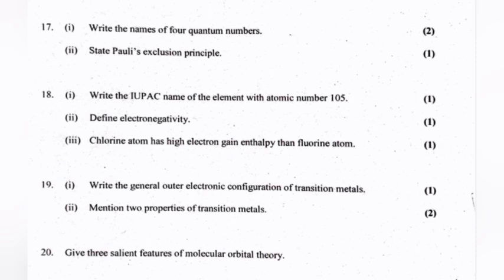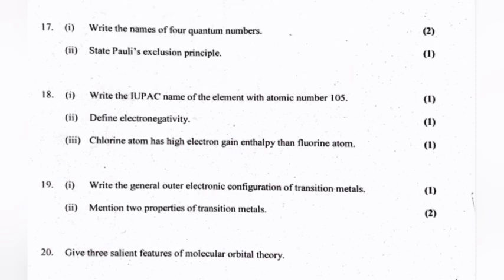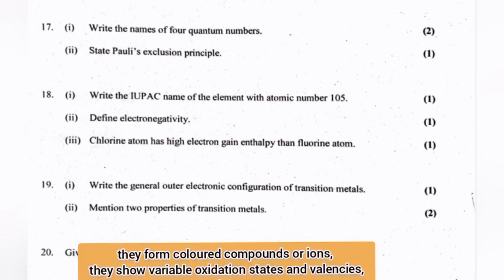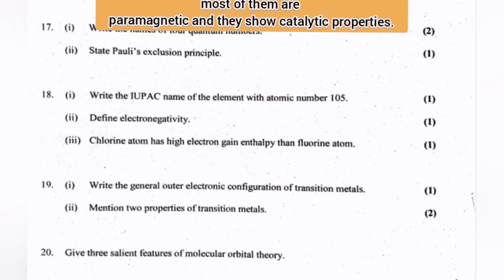Write the general outer electronic configuration of transition metals. Mention two properties of transition metals. They form colored compounds or ions. They show variable oxidation states and valencies. Most of them are paramagnetic and they show catalytic properties.